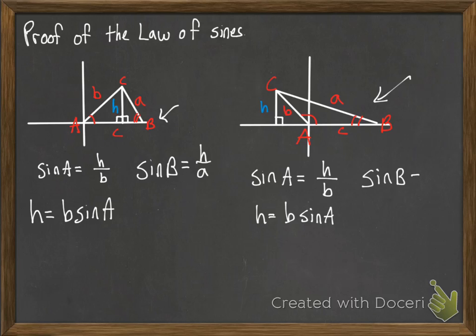Sine of B, using the big triangle now, the opposite is H, the big right triangle H over the hypotenuse which is A. And again just like we did with the other one, we can solve both of those for H. H is A sine of B in either case.